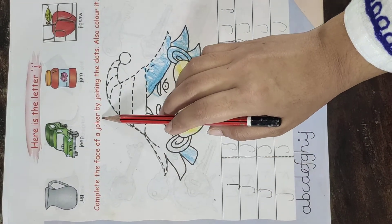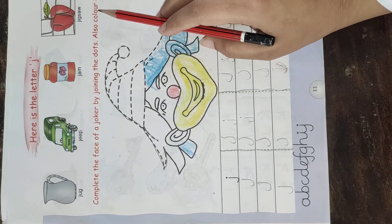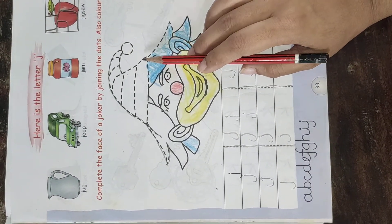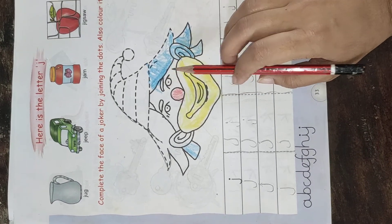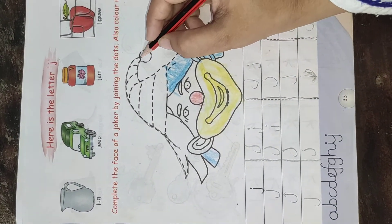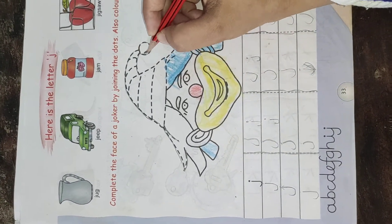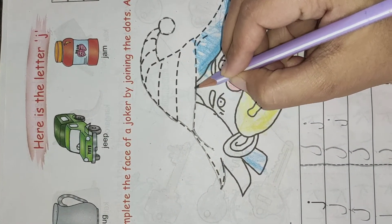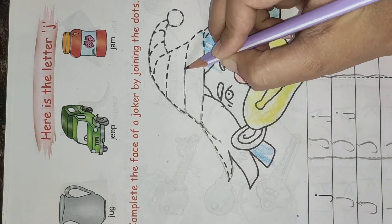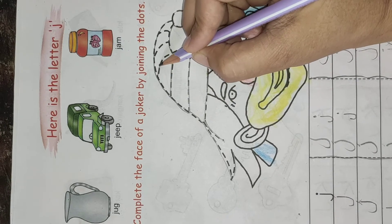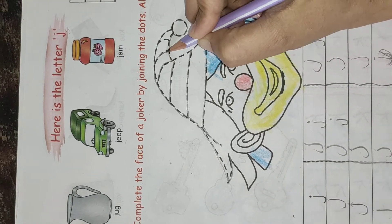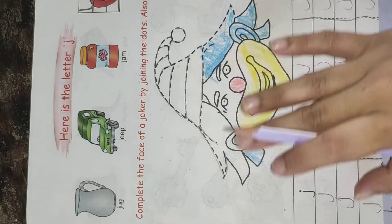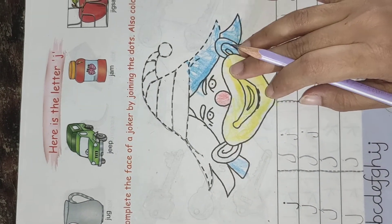Complete the face of a joker by joining the dots and also color it. Children, here some dotted lines are given. So you have to join these dots with your pencil like this. This is a shape of a joker. You have to color this. After you join all the dots, you will color it using crayons only.